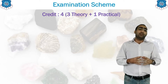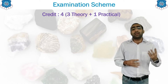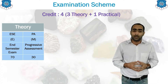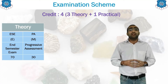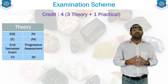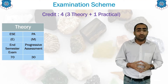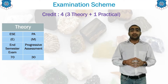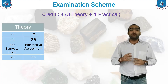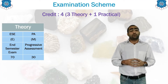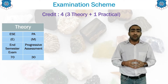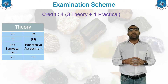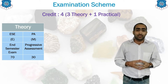Going for the theoretical examination, there are two types which are going to be conducted. The first one is the ESE, that is the End Semester Examination, which is taken by the board and is of 70 marks. The second one is the PA, that is the Progressive Assessment, which is taken for 30 marks and includes the mid semester examination.